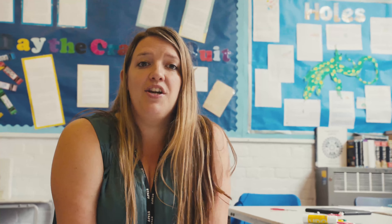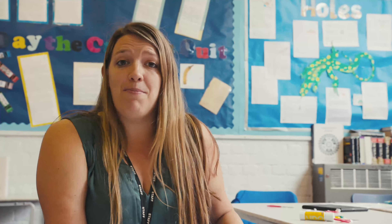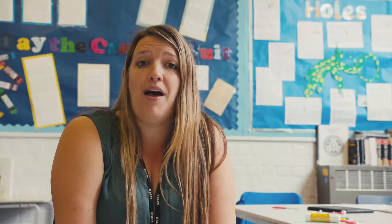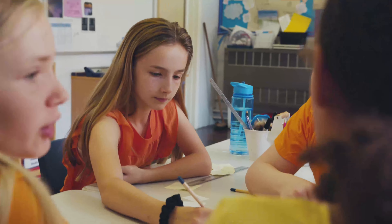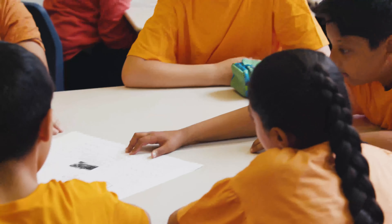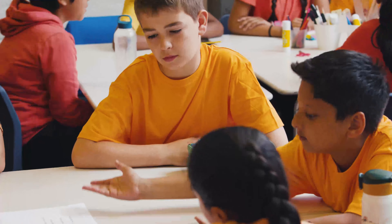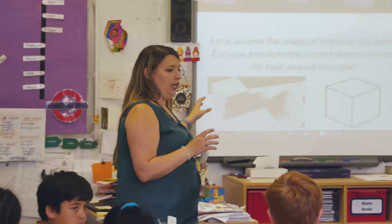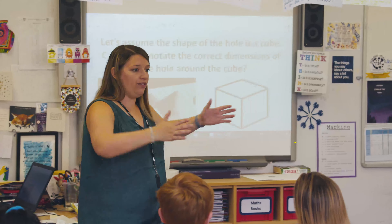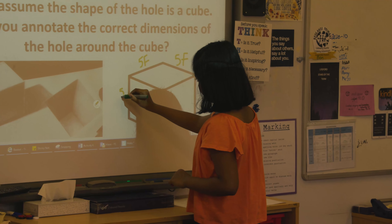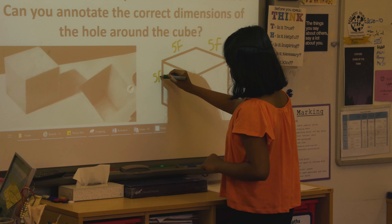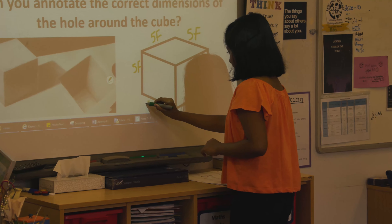For the first part of the challenge, we looked at the shape of the hole being a cube, focused on what the dimensions would be in feet and then moving on to centimetre cubes. We're going to assume that the hole is a cube, because we know it's five foot in every single direction, so the area Stanley dug out is going to be a cube.